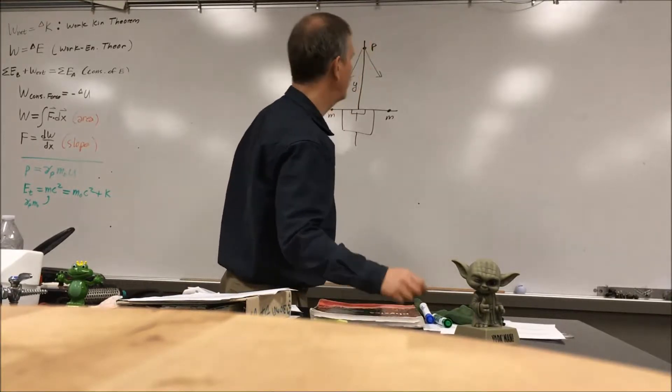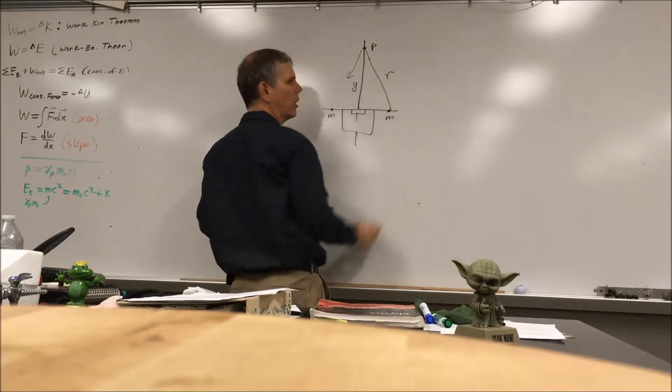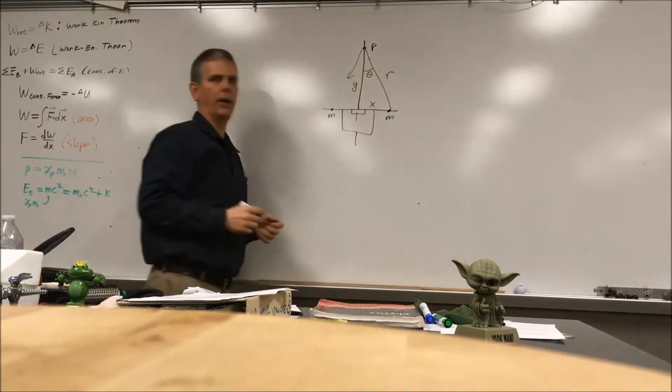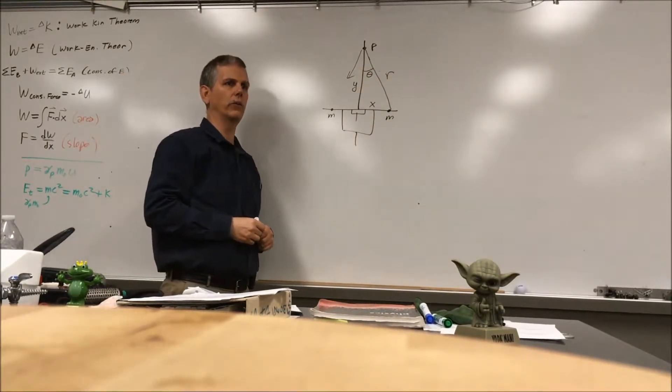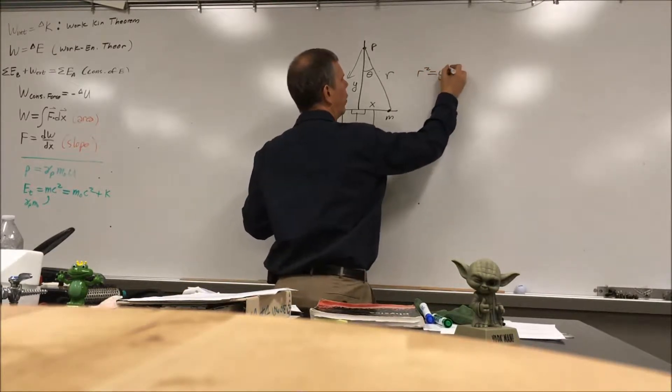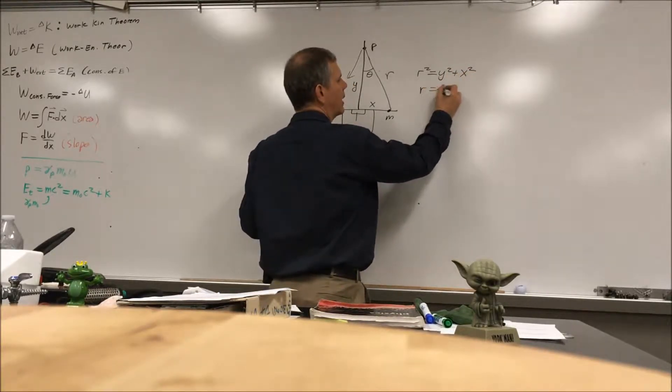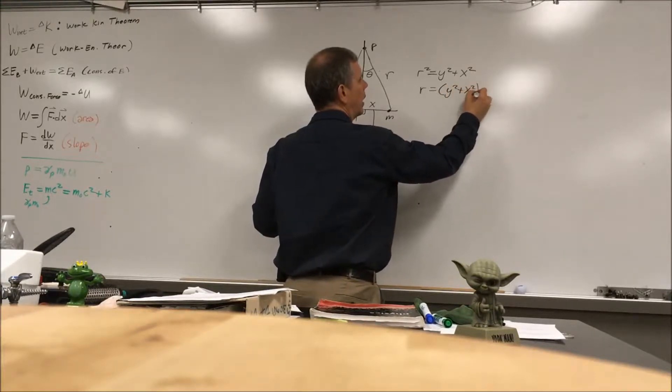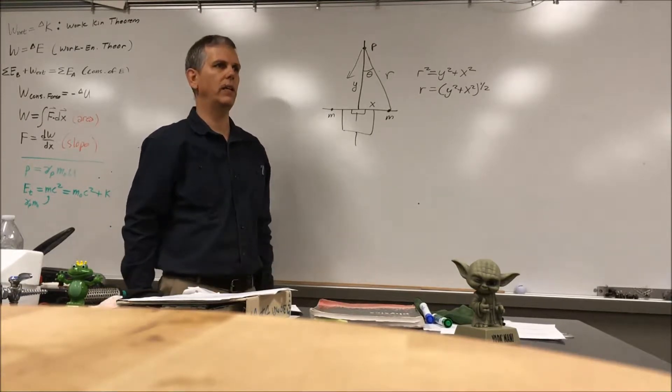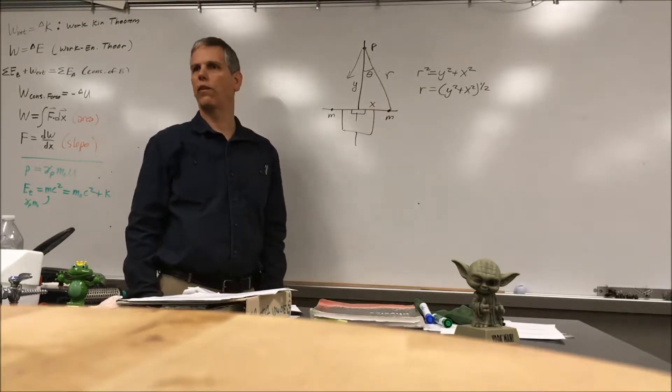Background information we hopefully remember from last time: if this distance from here to here is r, if this is x and this is theta, we use basic right triangles. We know that r squared equals y squared plus x squared, or that r equals the square root of y squared plus x squared. You'll need that right there for the final derivation.